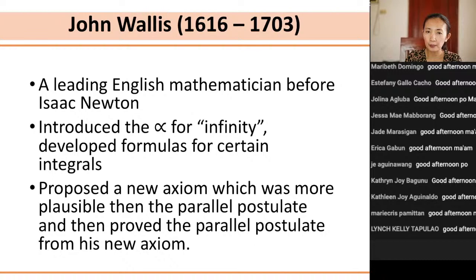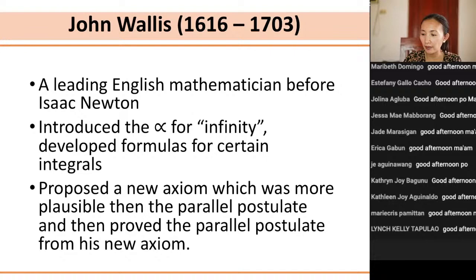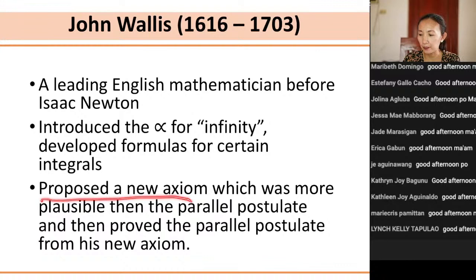Aside from Proclus, another mathematician — an English mathematician who existed before Isaac Newton — tried to prove the fifth postulate: John Wallis. We also give credit to John Wallis for introducing the symbol for infinity, for developing formulas for certain integrals, and for proposing a new axiom which was more plausible than the parallel postulate, and then proving the parallel postulate from his new axiom. John Wallis studied at Emanuel College in Cambridge where he earned both a BA and MA in theology.